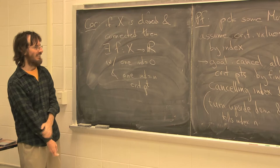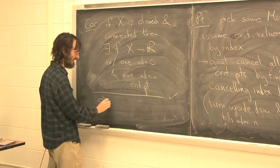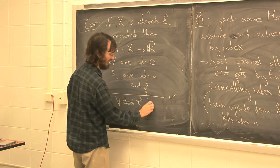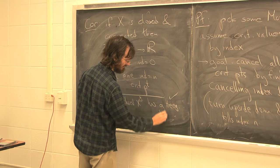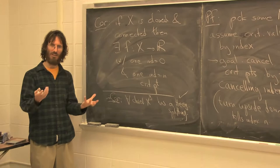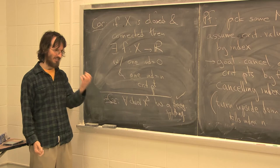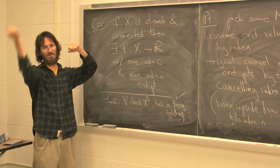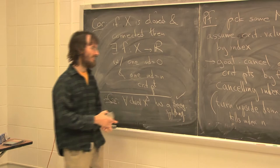From that you get that every closed 3-manifold has a Heegaard splitting. Because if you have a single 0-handle with a bunch of 1-handles attached, that's the bottom half — a genus-g handlebody. Then flip it upside down: the 3-handles and 2-handles become a 0-handle and a bunch of 1-handles, which are both genus-g handlebodies joined together.